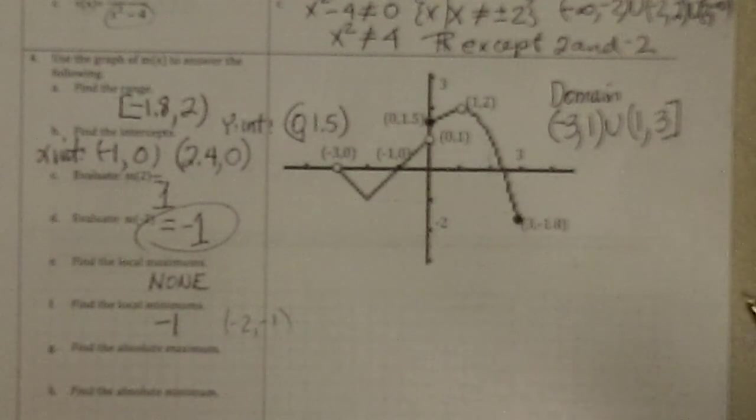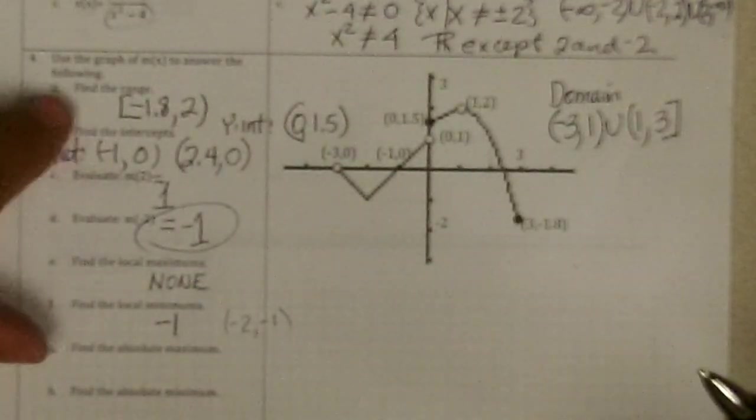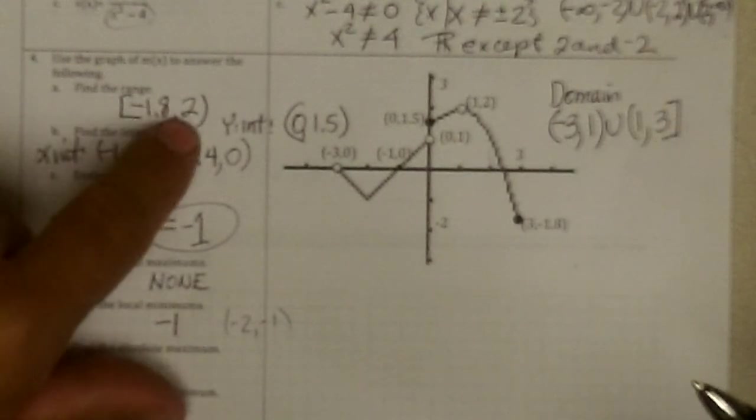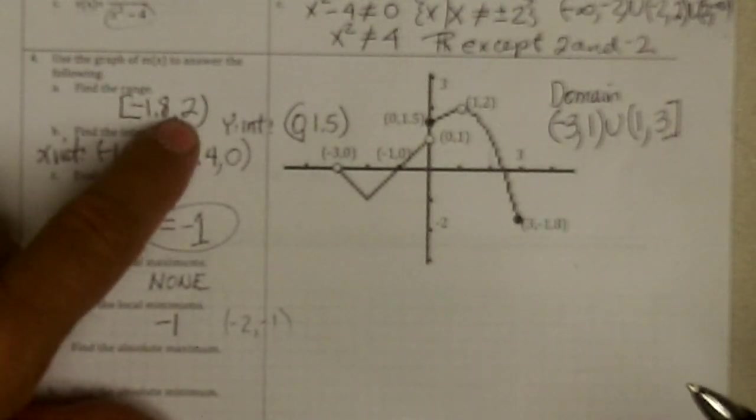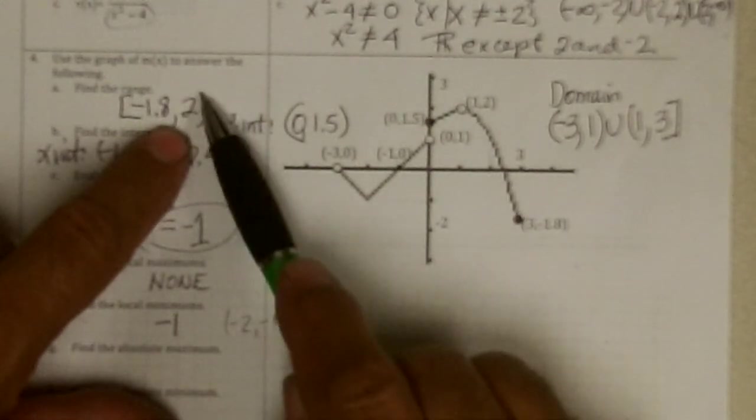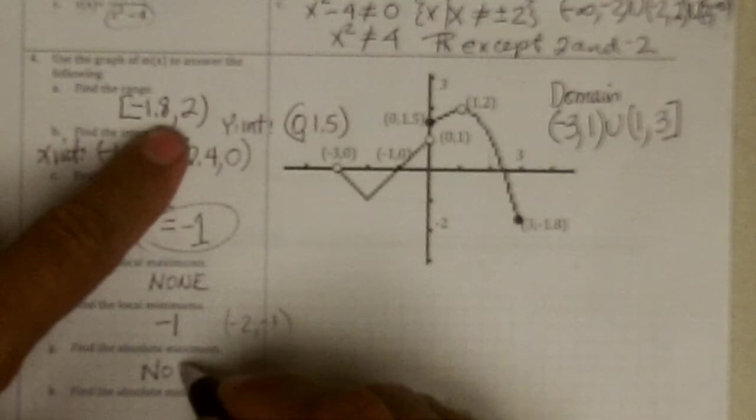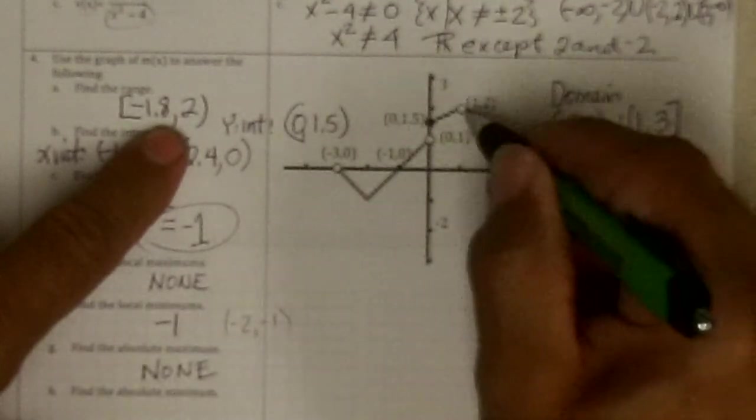Is there an absolute max? So now we're just looking, is there a very highest place? Which would be the upper end of the range. And the upper end of the range is 2. But it's opened. So there is none. There's an open circle.